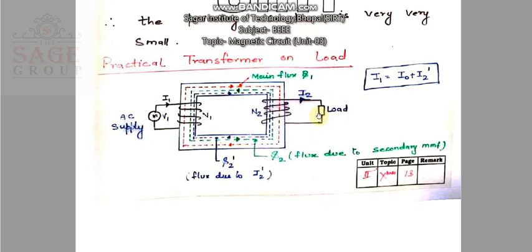Let us start — what happens when we connect a load in the secondary winding. As you see here, this is a transformer with two windings: this is your primary winding and this is your secondary winding. In the primary winding, we have supplied AC supply of voltage V1. When you supply V1 at the terminal of the primary winding, current starts flowing and an EMF is induced in the coil, where N1 is the number of turns, due to the electromagnetic induction principle.